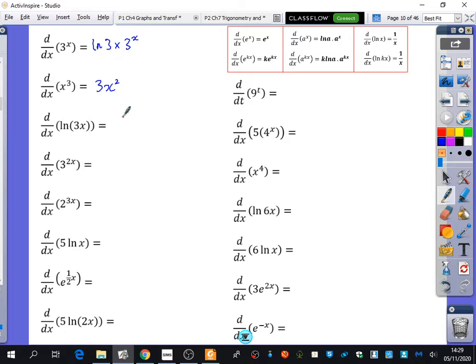Ln of 3x differentiates to 1 over x. Now we've got 3 to the power of 2x. 2ln3 times 3 to the power of 2x.